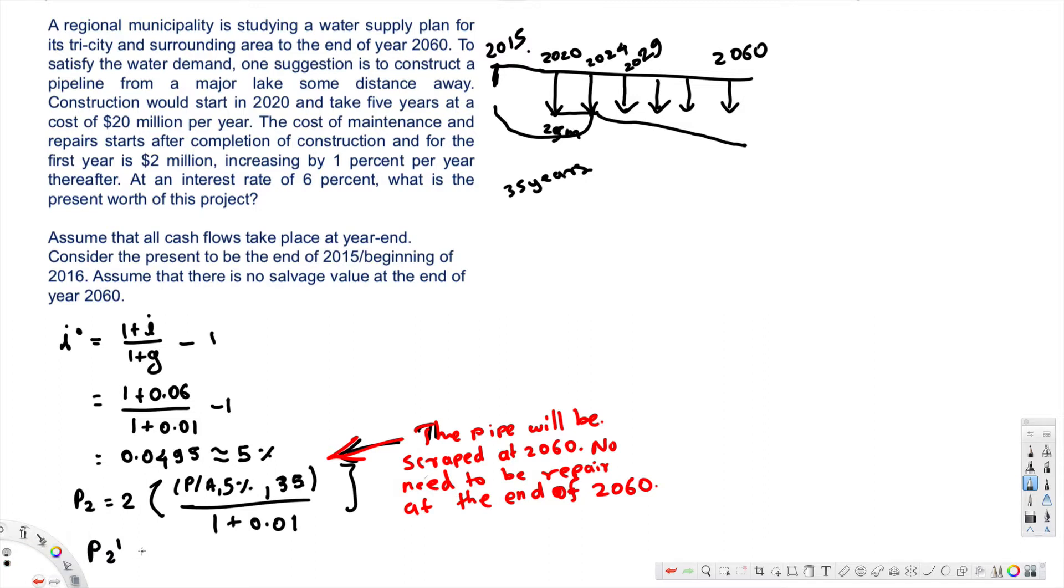Okay, now P2 prime equals 2 times (P/A, 5%, 35) divided by 1 plus 0.01, (P/F, 6%, 9). Now this value, if you look at this, this value is 16.374, and if you look at this value, that is 0.5919. So P2 prime will be 19.1914.